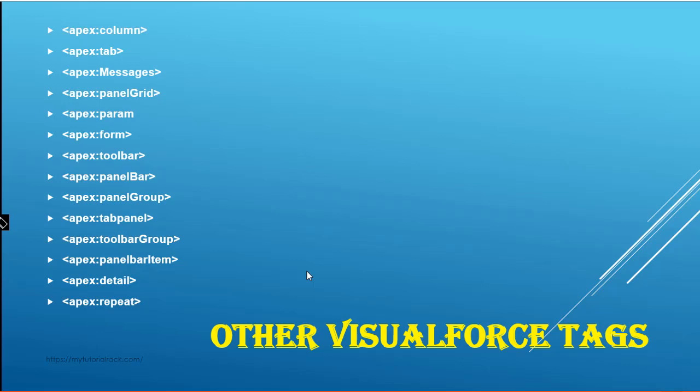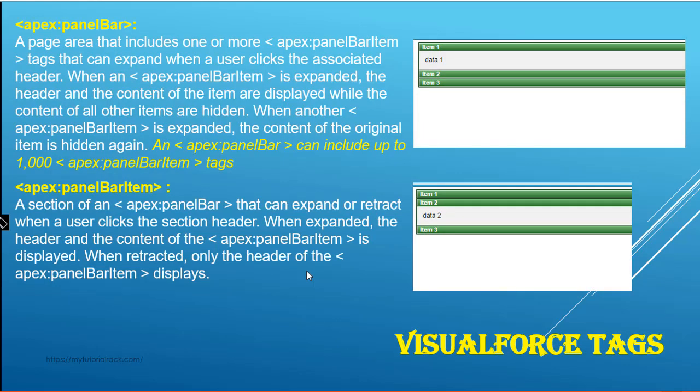Let's go ahead and start with the first tag, which is the panel bar tag. What is the purpose of this panel bar tag? As you can see here, it creates a panel and you can add items to this panel bar using the panel bar item tag. It creates a page area that includes one or more panel bar item tags, which can expand when a user clicks the associated header.